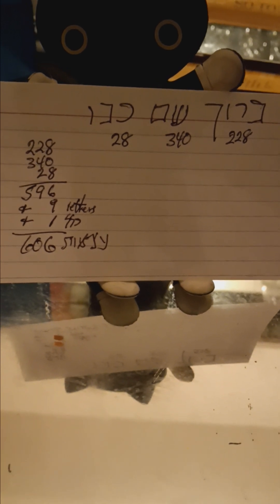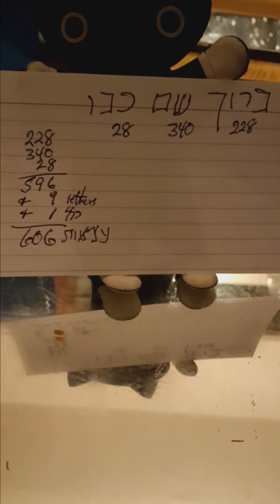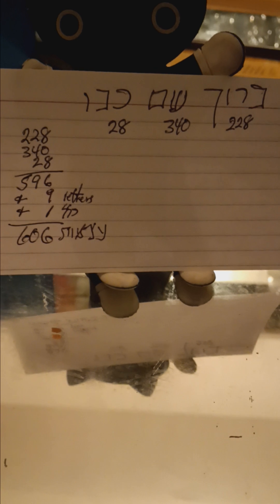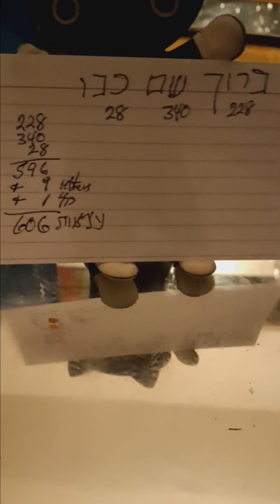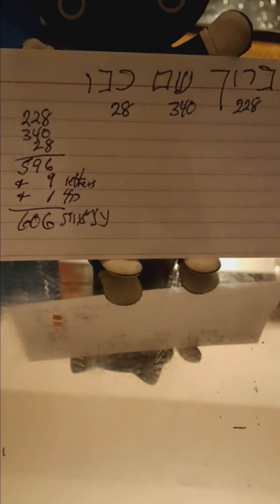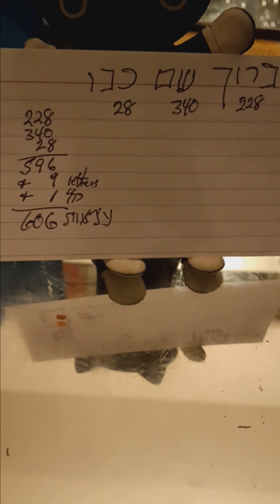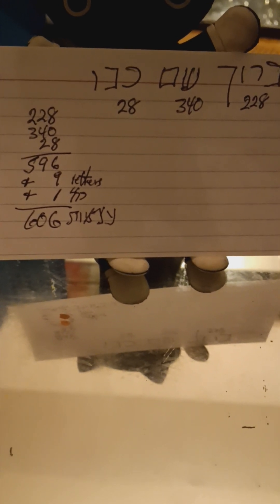Now, if I do the Gematria of these 9 letters, and today is the Vav letter is the propitious day, the last letter of the 9. I have 228 for Baruch, 340 for Shem, and then 28 for Kavod, that's 596, plus 9 letters for the 9 days, that's 605.